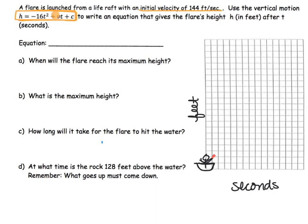So v equals our initial velocity. And also what we need to know is that c actually is always going to represent our initial height.